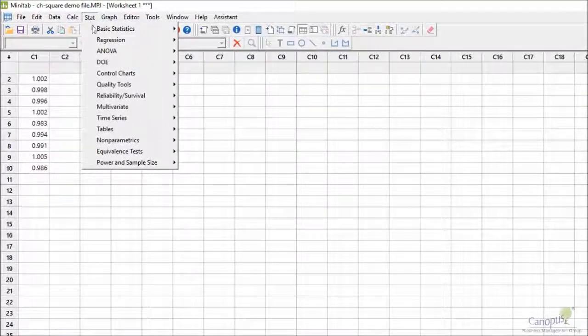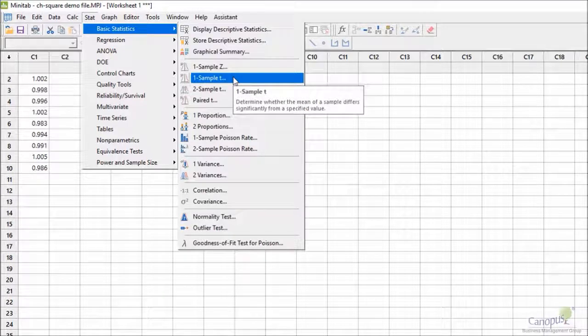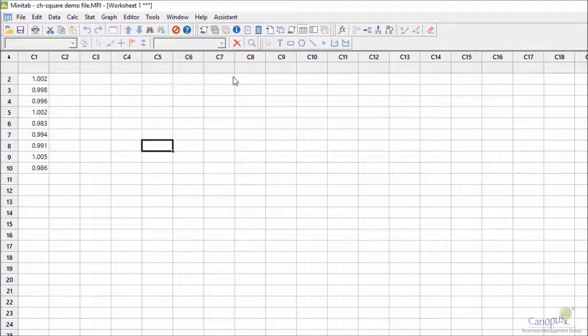And I'm going to go to Stat, I'm going to go to Basic Statistics, and out here I have One Sample t. So I'm going to click on this One Sample t.